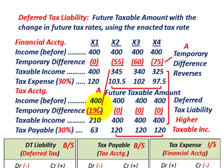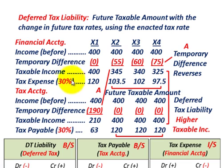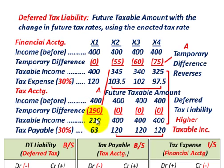Let's look at the first year. For financial accounting, our tax expense: we started with income before taxes of $400,000 and no subtraction for the temporary difference, so taxable income is $400,000 times the 30% tax rate, giving us a tax expense of $120,000. For tax accounting, we have income before taxes reduced by the $190,000 temporary difference, giving taxable income of $210,000 times 30%, so our current tax payable is $63,000. Everything is in thousands of dollars.